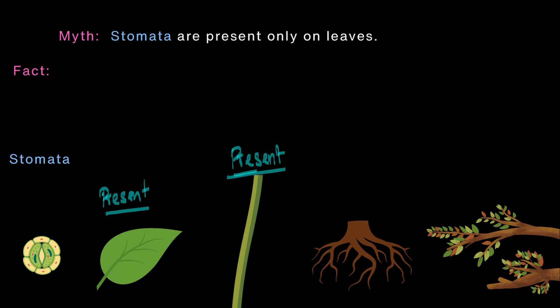In short, all parts of the plant that are capable of photosynthesizing has the stomata. On the other hand, the roots whose main function is to absorb water and minerals from the soil does not have the stomata.